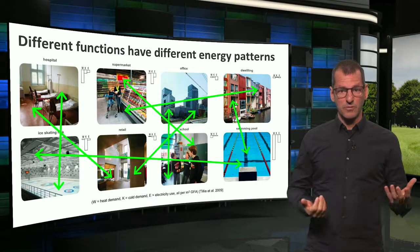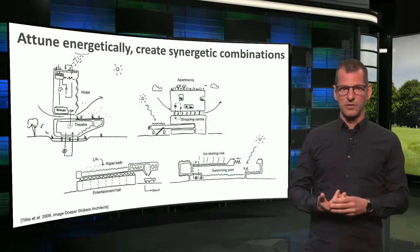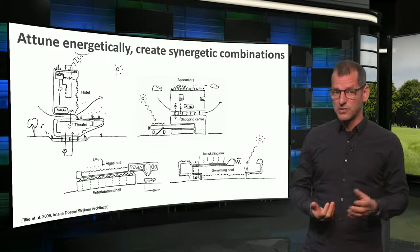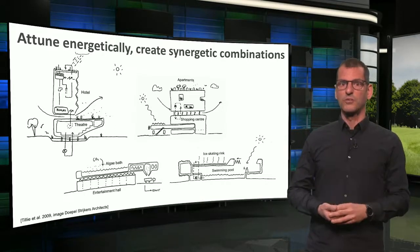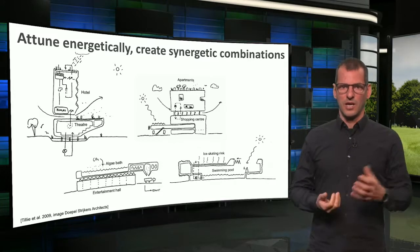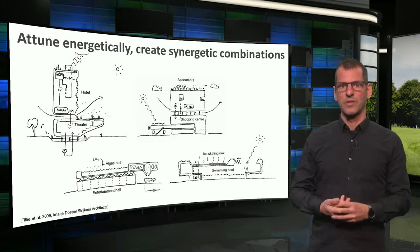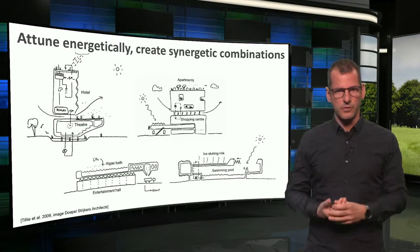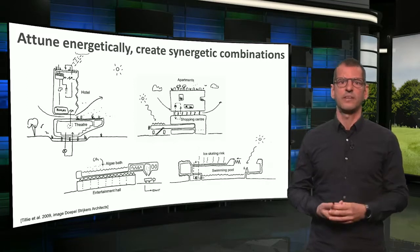It might seem a very technical assignment to exchange heat and cold, but this can also be done on the scale of one building that combines different functions. Based on the spatial use of energy for heating and cooling, a certain quantity of square meters of one function might be combined with a certain amount of floor space of another, in order to create synergy. It's a principle of nature. Here you see some of these possible combinations, which would then only need to have a combined energy system.